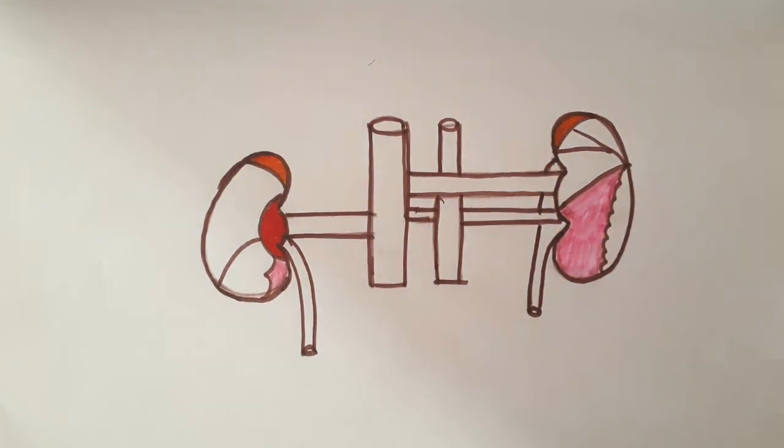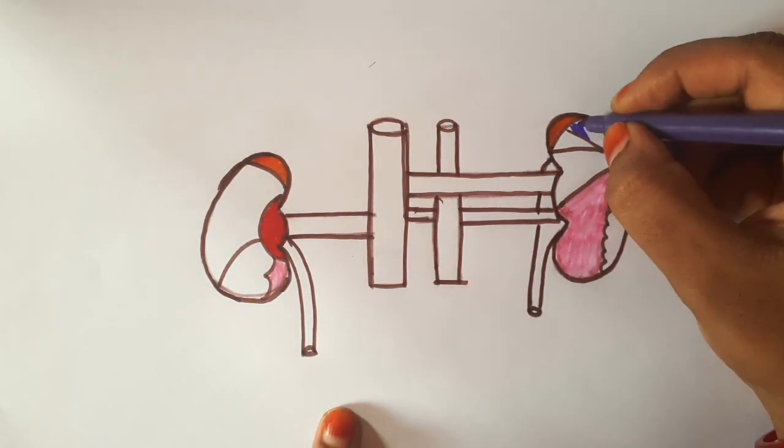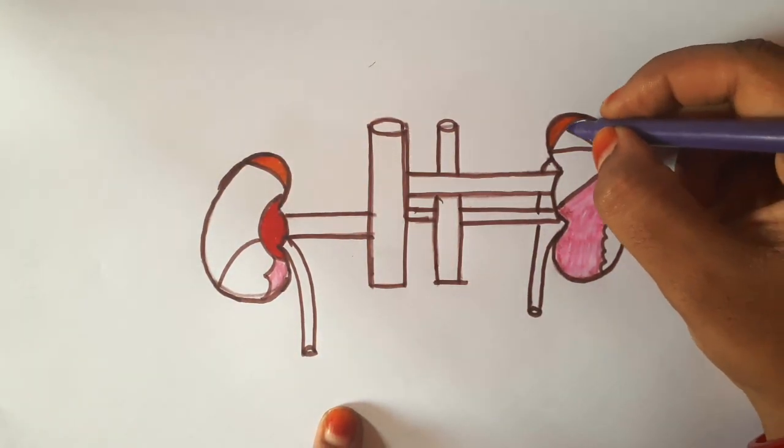The topmost part is the suprarenal area. Here also in right kidney, the pink part is jejunal area. In left kidney, this is the splenic area.